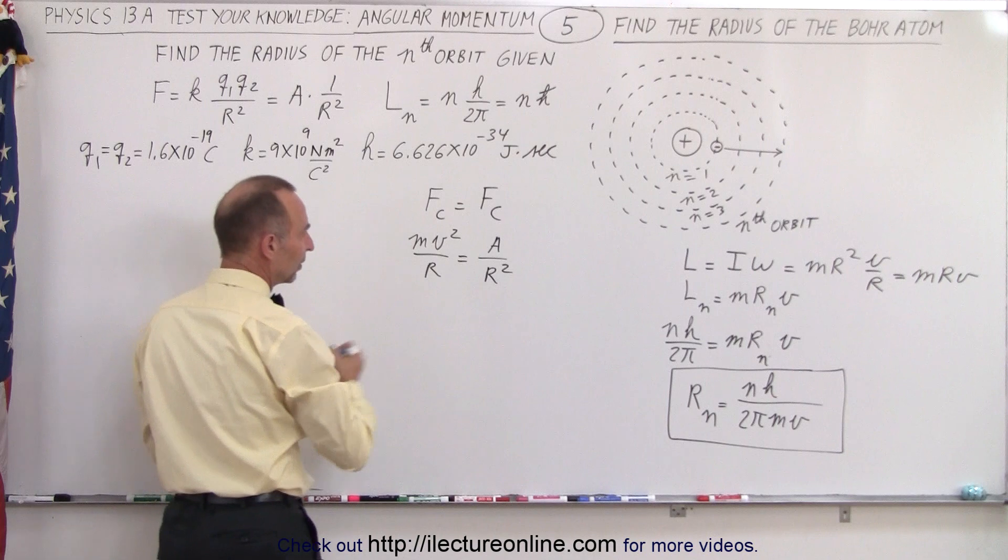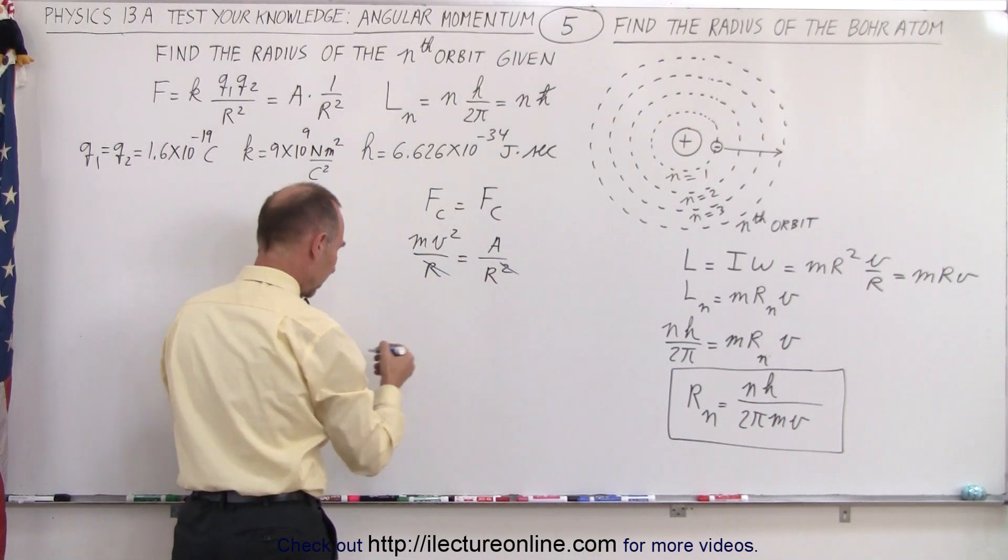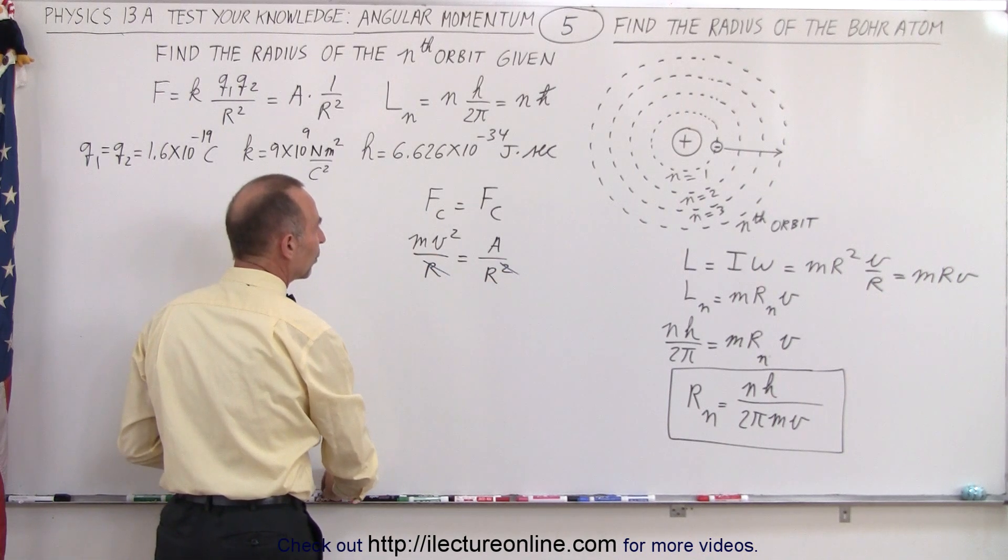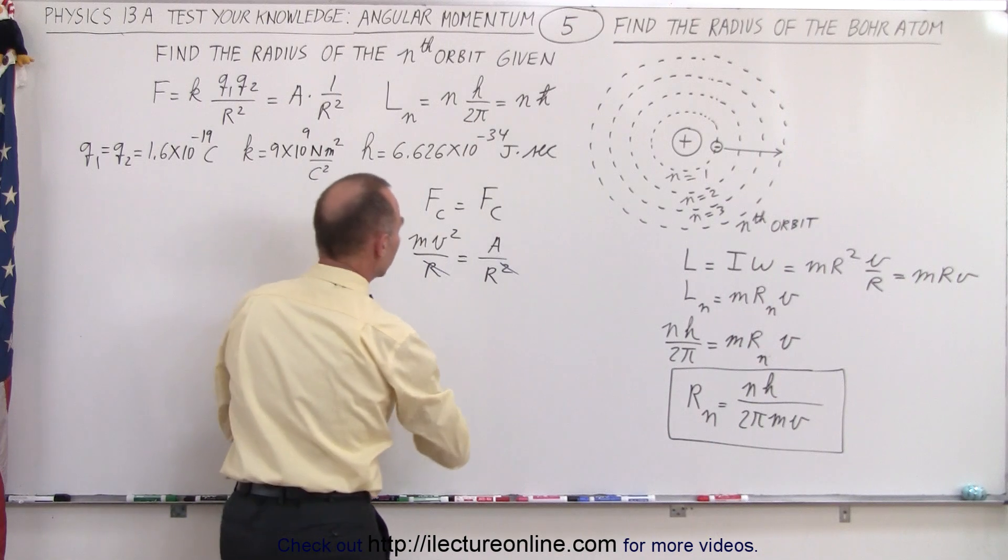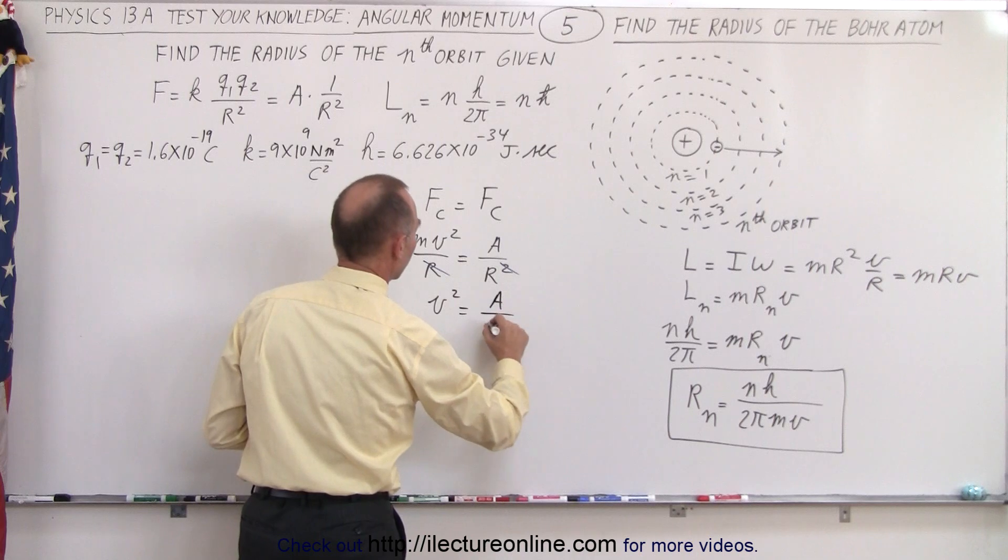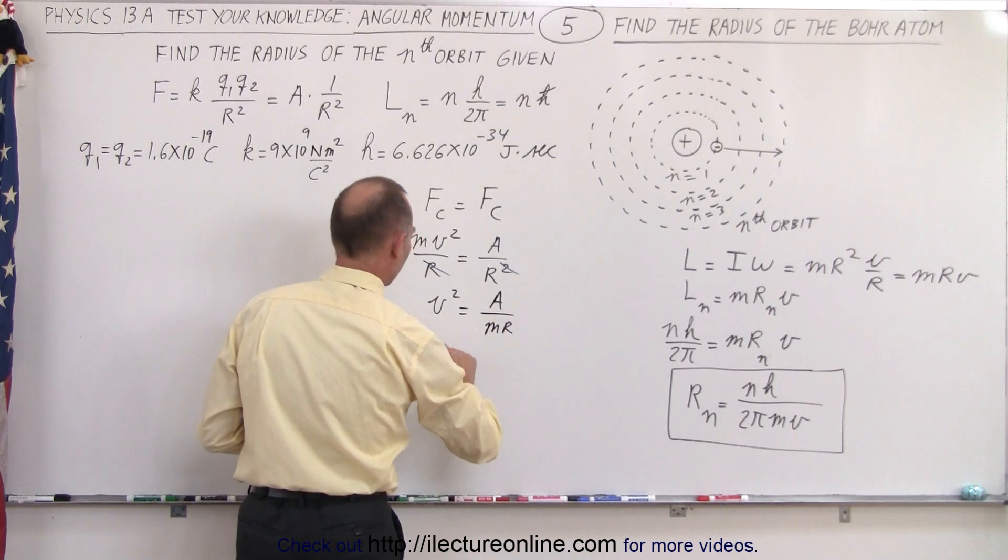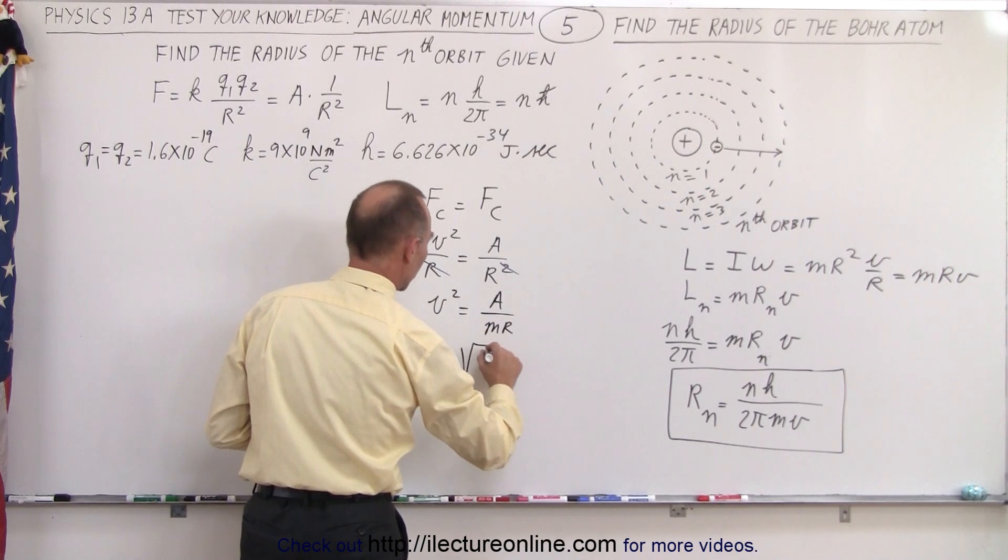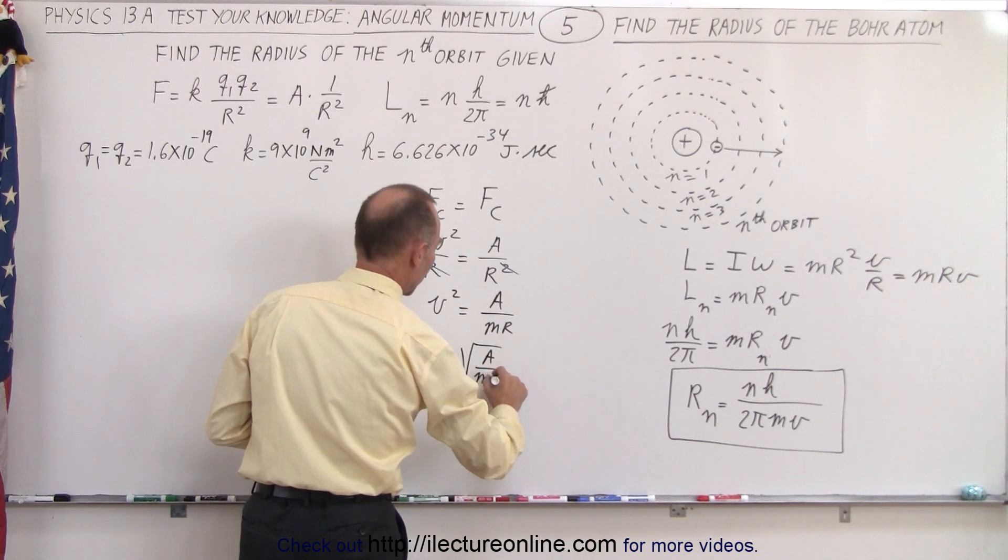Simplifying that, we can see that this r would cancel out that r, and then we can write v squared to be equal to a over mr, or v can be written as the square root of a over mr.